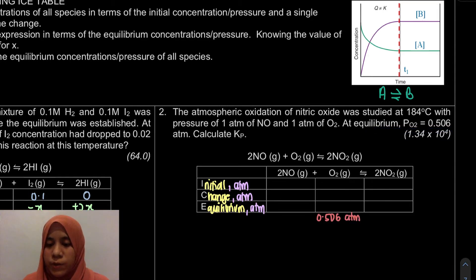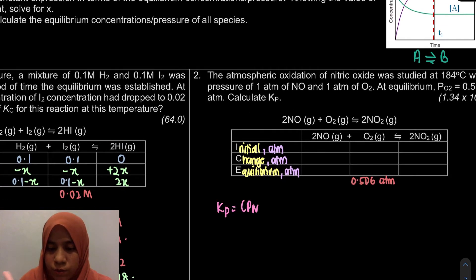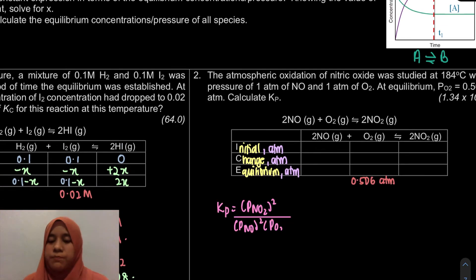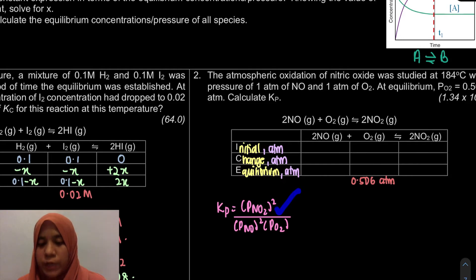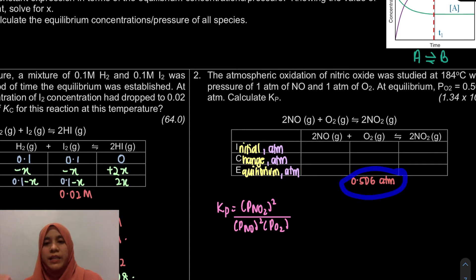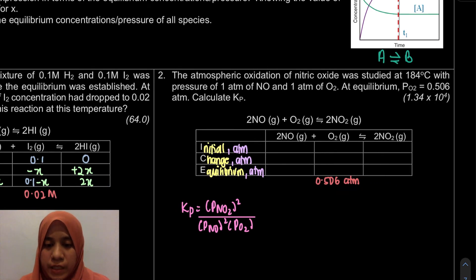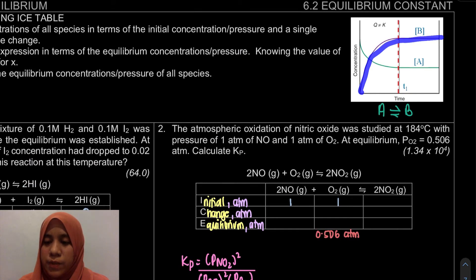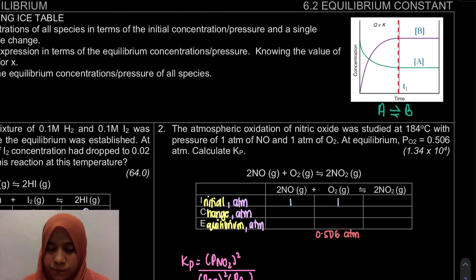I'll write down the KP expression. We need the pressure of NO2, NO, and O2 at equilibrium, but we only have the equilibrium value for O2. That is why we need the ICE table. For the reactants, NO is given as 1 atm and O2 is 1 atm, so we write 1 and 1 in the Initial row. For the product NO2, at the start of the experiment pressure equals 0 because the reaction has not yet started and no product has formed yet.